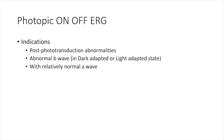Photopic on-off ERG — as the name suggests, this is a light-adapted ERG. Indications include any post-transduction abnormalities or an abnormal B wave in dark or light adapted ERG with a relatively normal A wave. After a full field ERG showing a grossly normal A wave with reduced B wave amplitudes, a photopic on-off ERG gives more information. These extended protocols were initially not specified by ISCEV but were standardized after multiple investigators validated them.